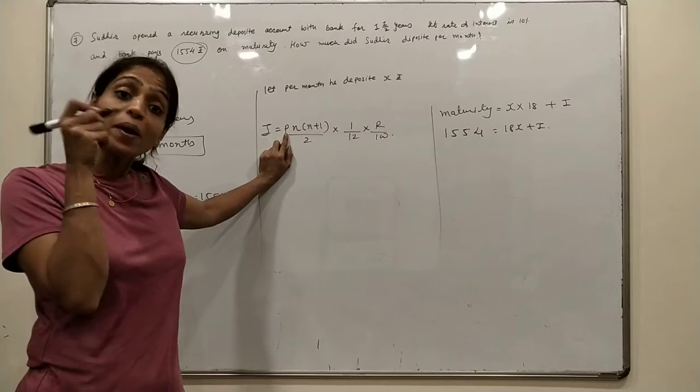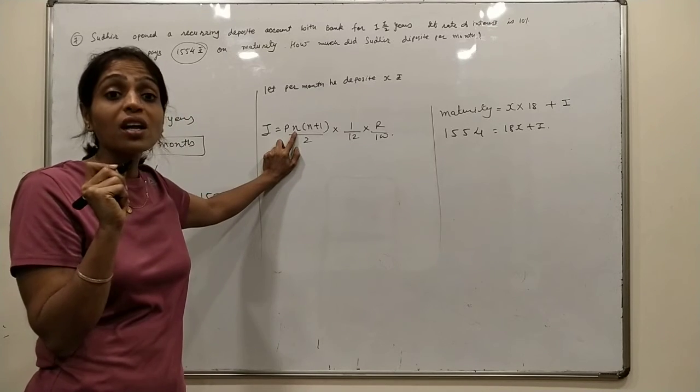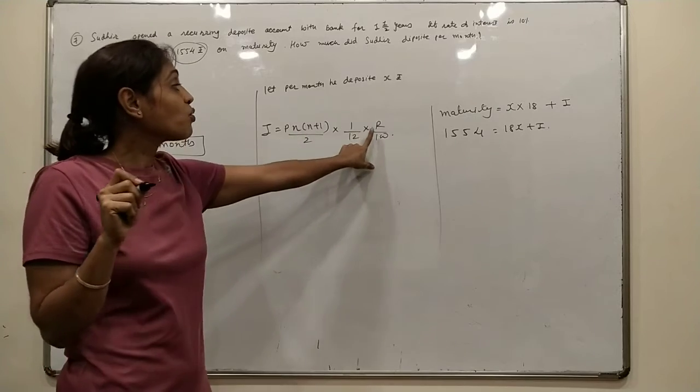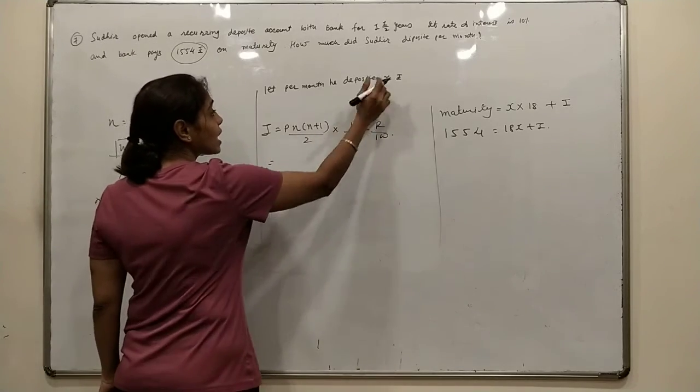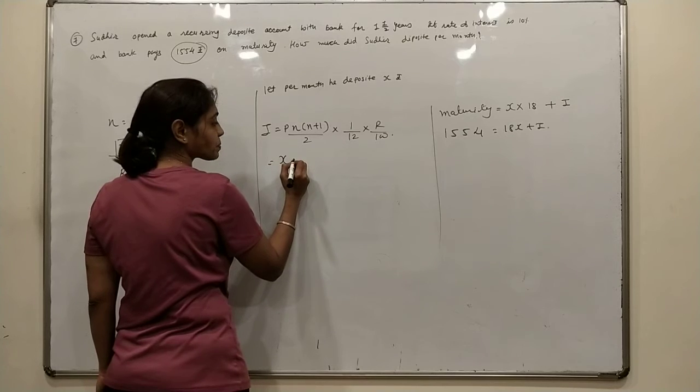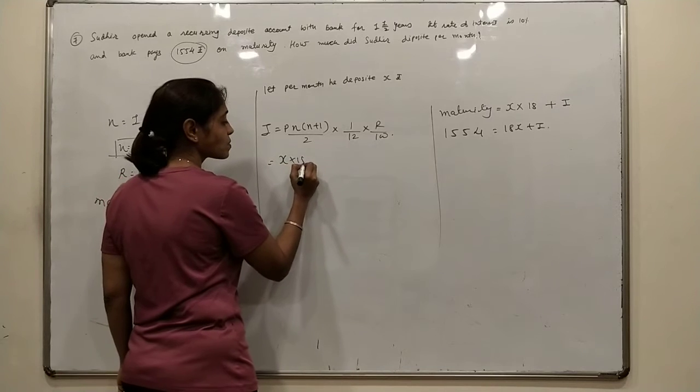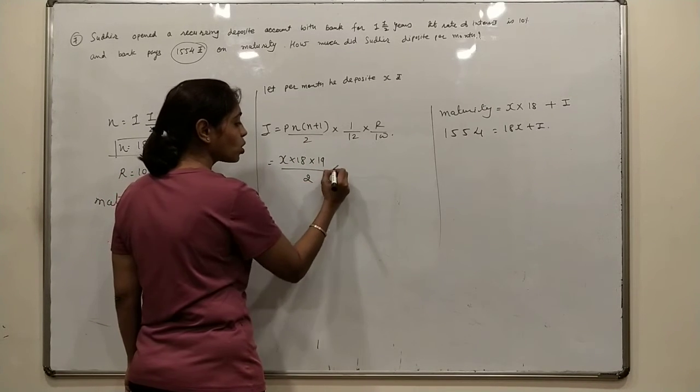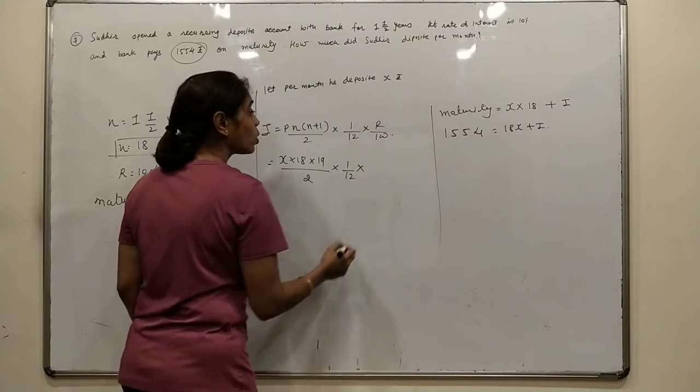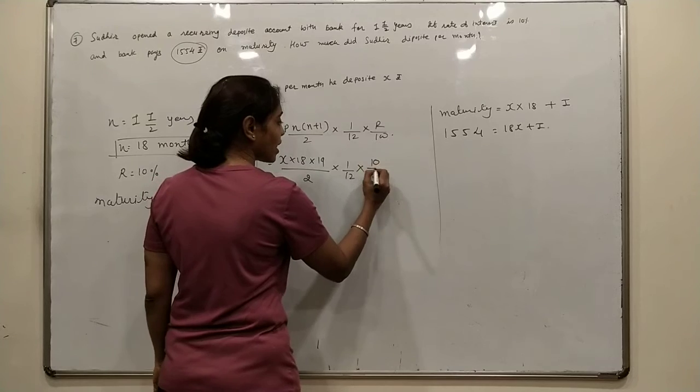P is the per month money deposited, n is the number of months, r is the interest rate. Got it? So the interest: per month is x rupees, number of months is 18, so x times 18 times (18 plus 1), which is 19, divided by 2, times 1/12, times the rate of interest. The rate of interest is 10 by 100.